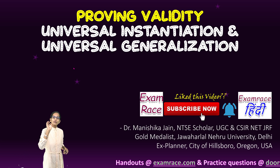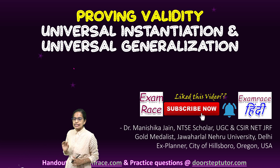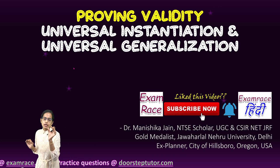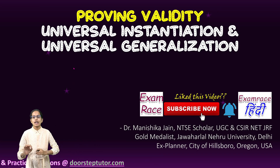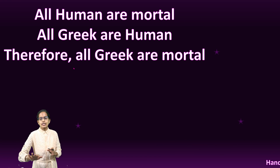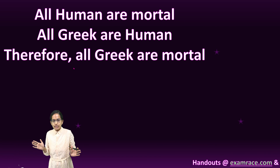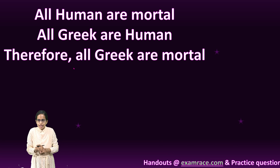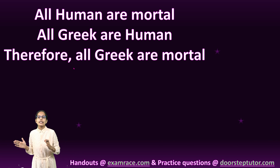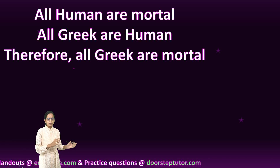In this class on proving the validity for universal instantiation and generalization of the predicate calculus, we will understand this with a very simple example. The example is the very common one we have been covering in our logic classes: all humans are mortal, all Greeks are human, therefore all Greeks are mortal.